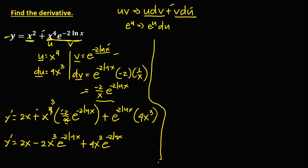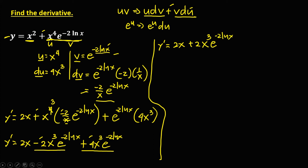Simplify by combining like terms. We have y prime equals 2x. This x and x to the power 4 cancel, making the exponent 3. Positive times negative gives negative 2x to the power 3 times e to the power negative 2 lnx, plus 4x to the power 3 times e to the power negative 2 lnx. Combining negative 2 and positive 4, we get positive 2. So y prime equals 2x plus 2x to the power 3 times e to the power negative 2 lnx.